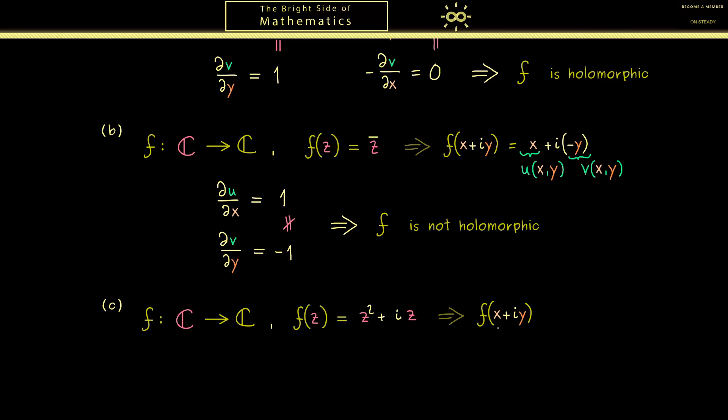Now by writing x plus iy instead of z we actually have something to do now. Because in this expression here we don't see immediately the real and the imaginary part. We first have to calculate a little bit. However that's not so complicated. We simply can do the whole calculation here. So we have x² plus i times 2xy minus y² from the binomial plus i times x and minus y. Now let's put the real part to the left and the imaginary part to the right.